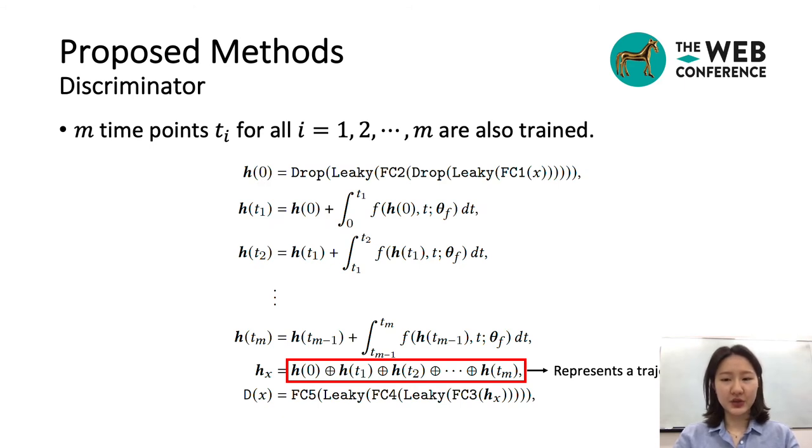This is a detailed architecture of discriminator. To determine whether a sample X is fake or not, we use m hidden vectors at time t_i and there are m time points. Since t_i is also trained, time points can change during training in the process of locating the optimal positions. As you can see in the red box, m hidden vectors are concatenated and form a vector h_t. Since a set of hidden vectors represents a trajectory, the discriminator can make decisions through the entire trajectory.